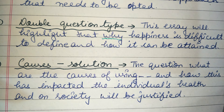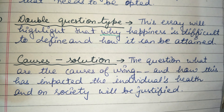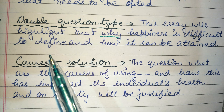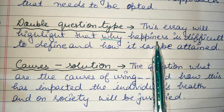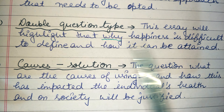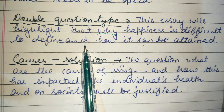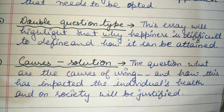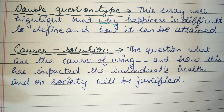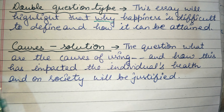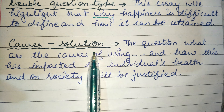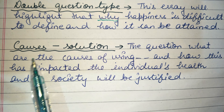For example: 'This essay will highlight why happiness is difficult to define and how it can be attained.' This covers both parts of the question — why happiness is difficult to explain and how we can achieve it. Last but not least, we have our causes and solutions type.